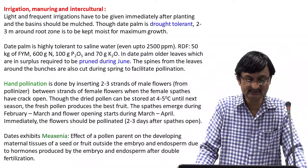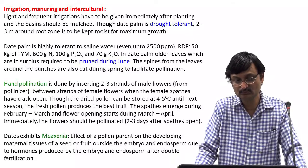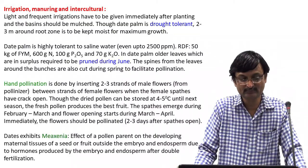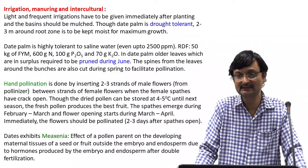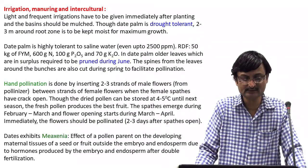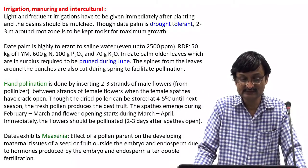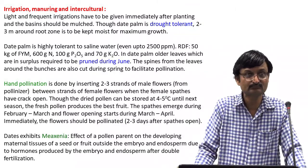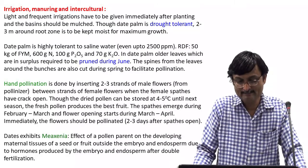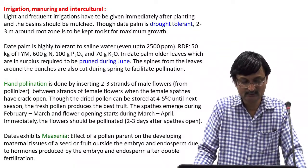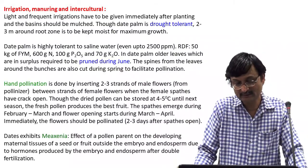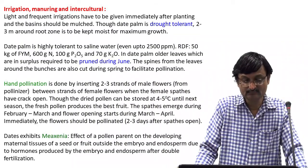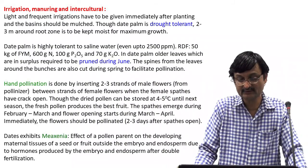Hand pollination: It is done by inserting two to three strands of male flowers from pollinators between strands of female flowers when the female spathes have cracked open. Pollinisers are the plants which provide pollen, whereas pollinators are the agents by which pollination is mediated. Although dried pollen can be stored at 4 to 5°C until next season, fresh pollen produces the best type of fruit. The spathes emerge during February–March and flower anthesis starts during March–April. The flowers should be pollinated 2 to 3 days after spathes open.